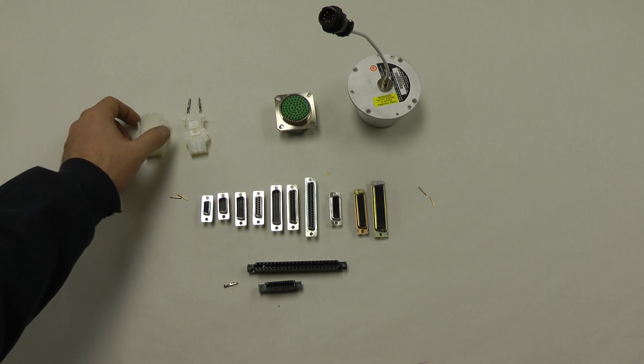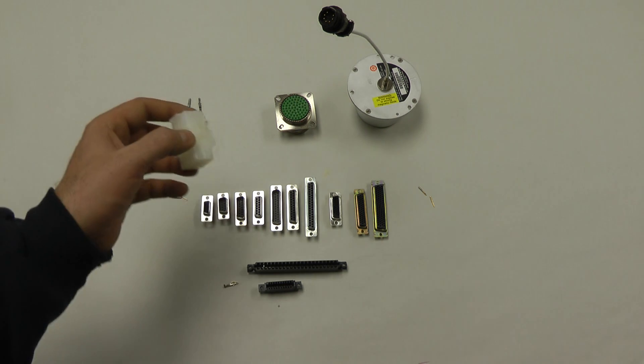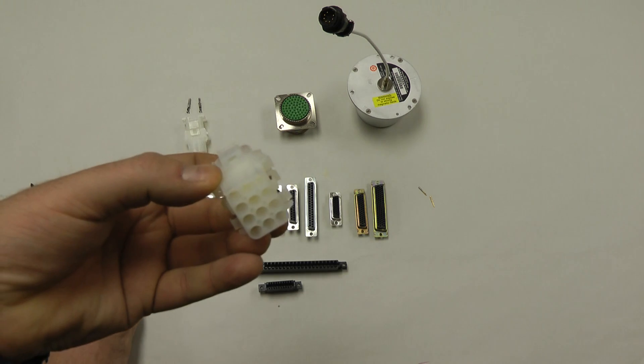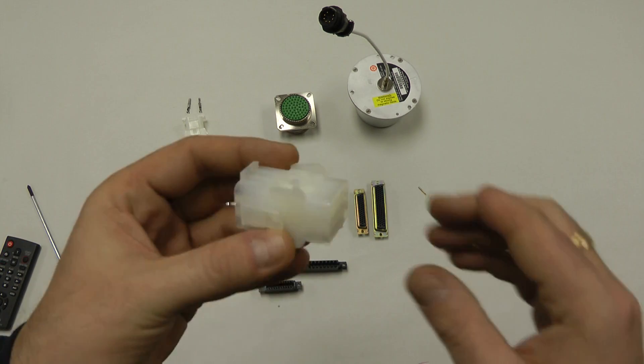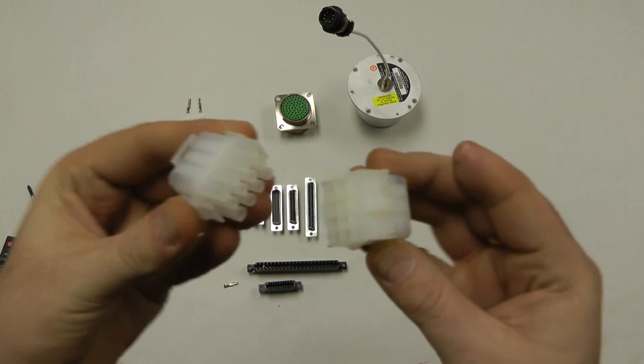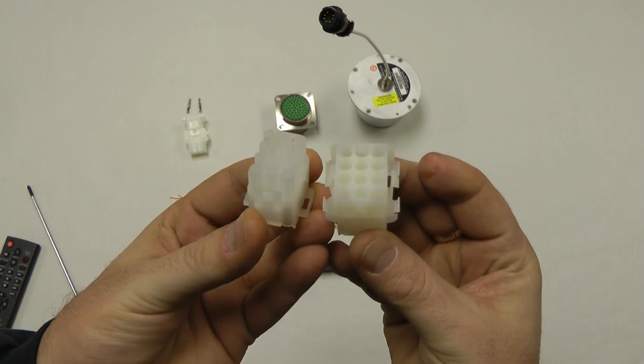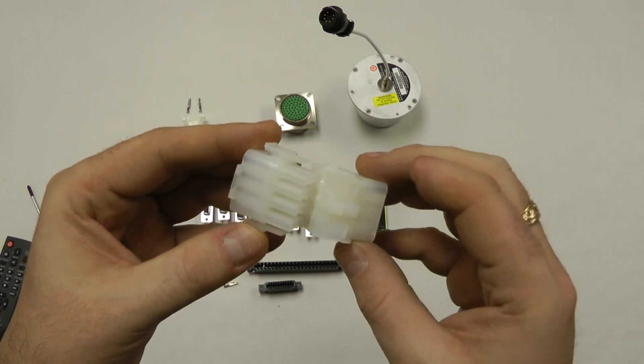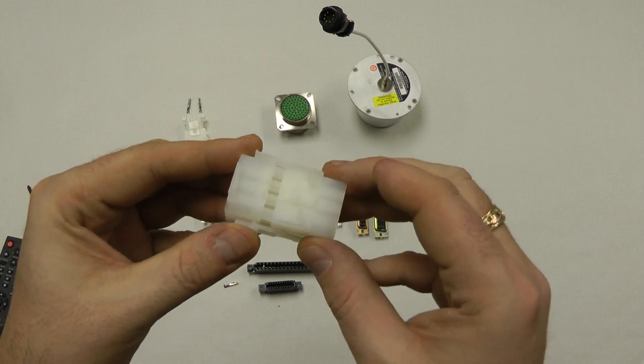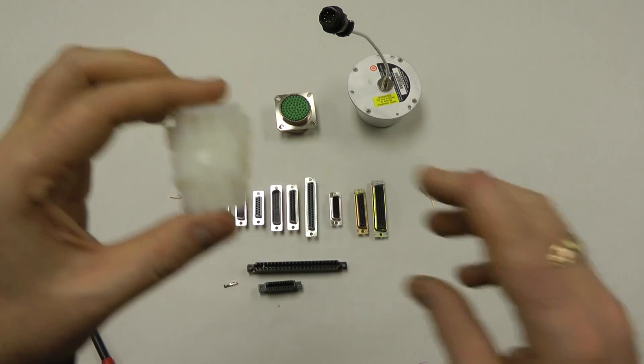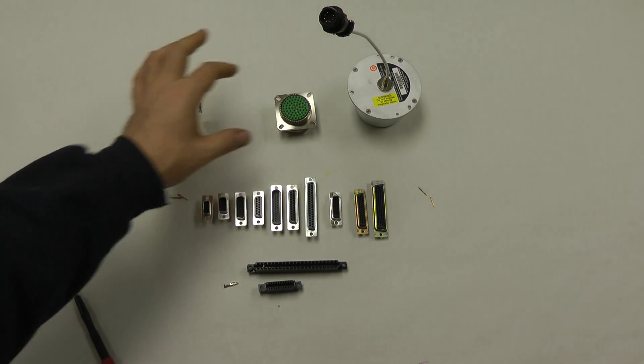Another type of connector you see often is what we'll call a molex or a mate and lock type connector. This is a very universal type connector you can use to hook up many circuits. It comes apart. They come in various configurations from very few circuits up to very many circuits and will hold many different sizes and types of wire. They can go in bulkheads. They can mount on your wing root all over the place.